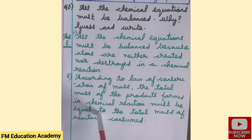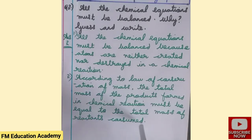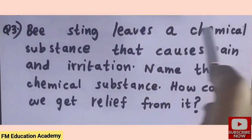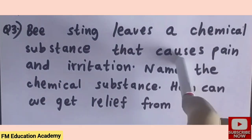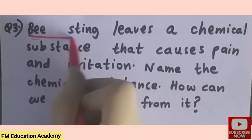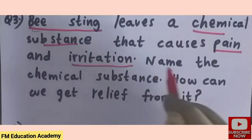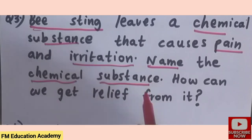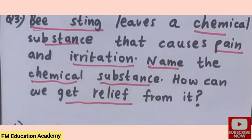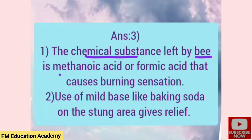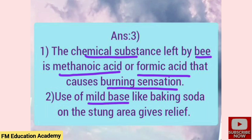Third question: a bee sting leaves a chemical substance that causes pain and irritation. The chemical substance left by a bee sting is methanoic acid, also called formic acid, which causes a burning sensation. To get relief from the pain, apply a mild base like baking soda on the stung area.